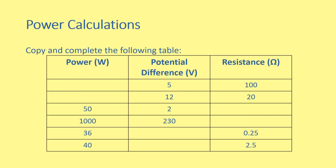Here's a table of potential values. Use the equation P equals V squared over R to determine the different values of power, resistance, and potential difference. The solutions are on the next slide. Feel free to pause while you have a shot.